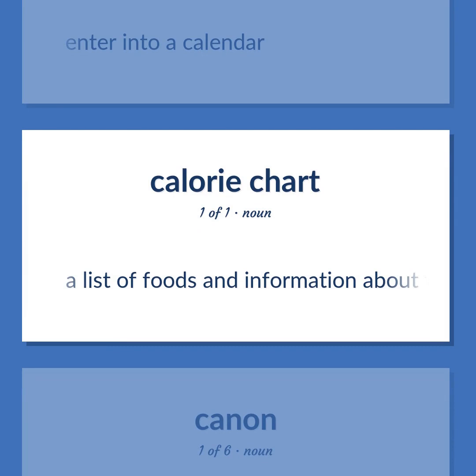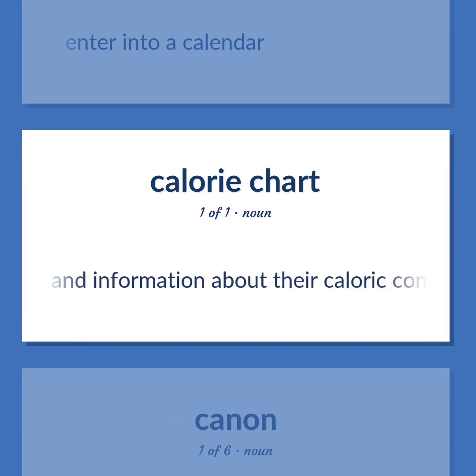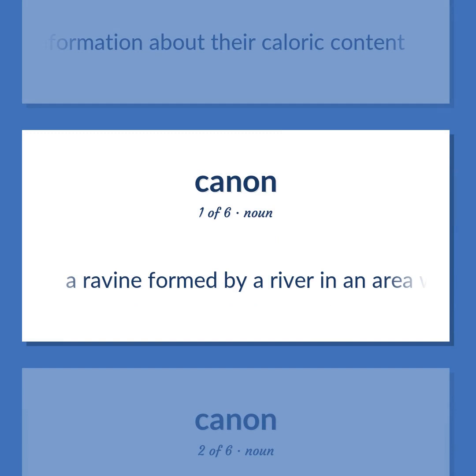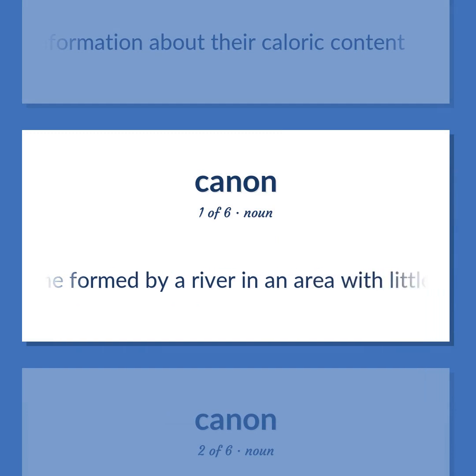Calorie counter: A list of foods and information about their caloric content. Canyon: A ravine formed by a river in an area with little rainfall.